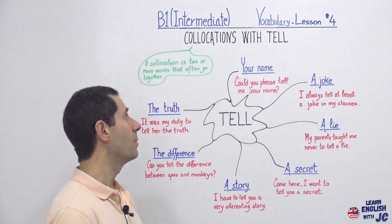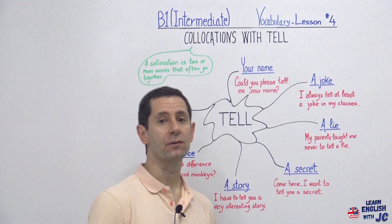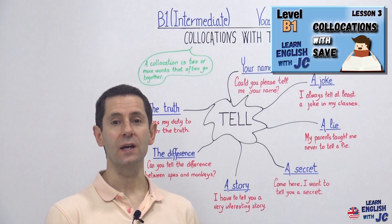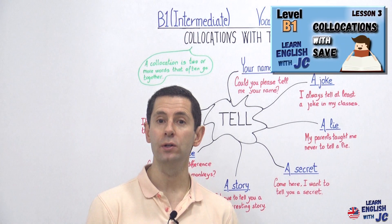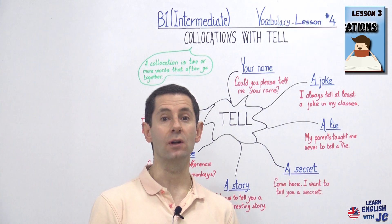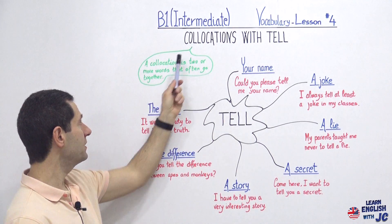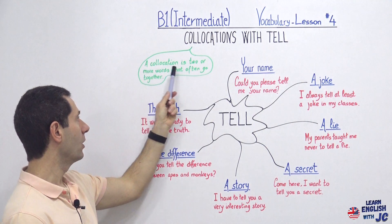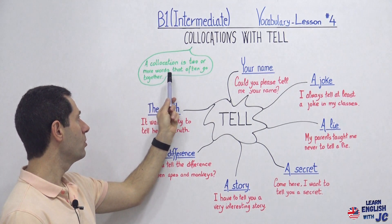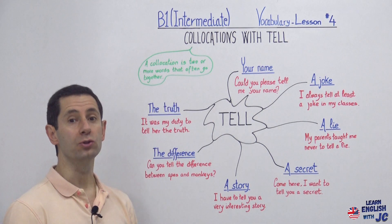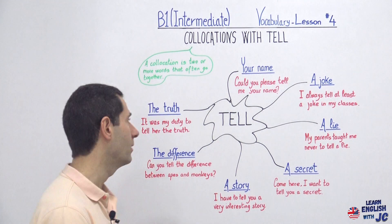Remember lessons two and three had to do with other collocations with other words, but today we are going to concentrate on 'tell'. First of all, what is a collocation? A collocation is two or more words that often go together, and they make sense when you put them together.